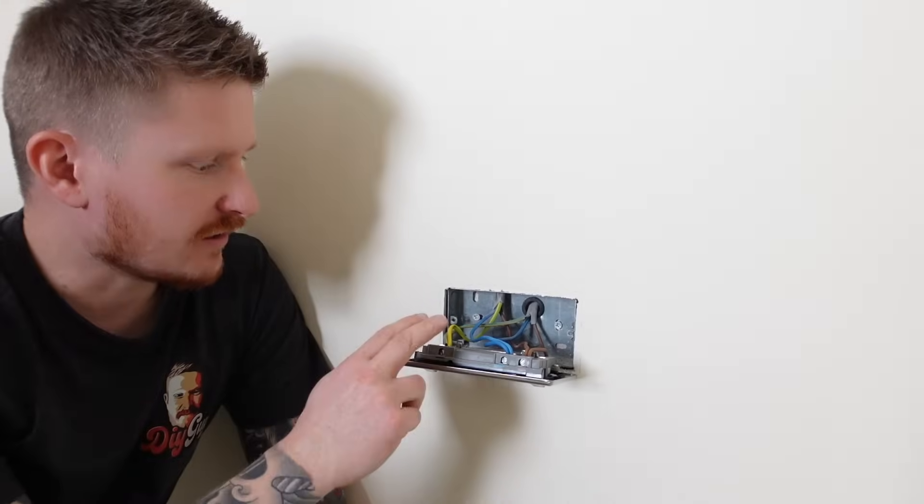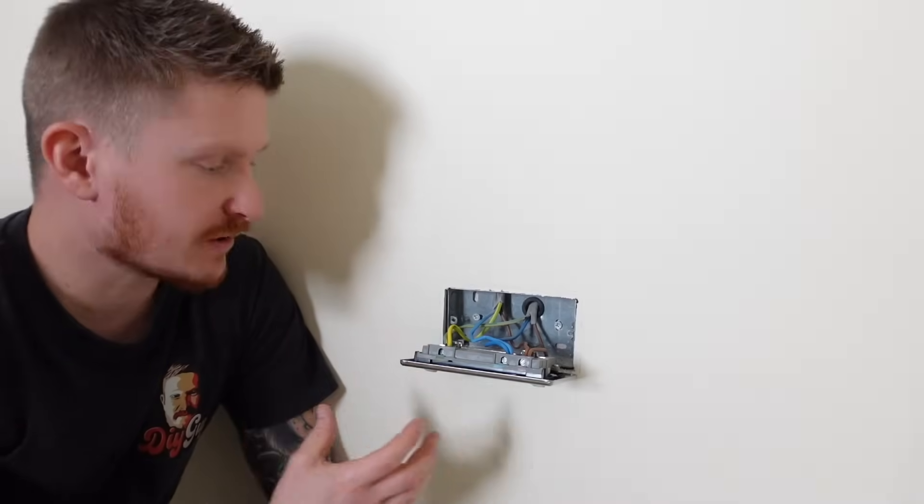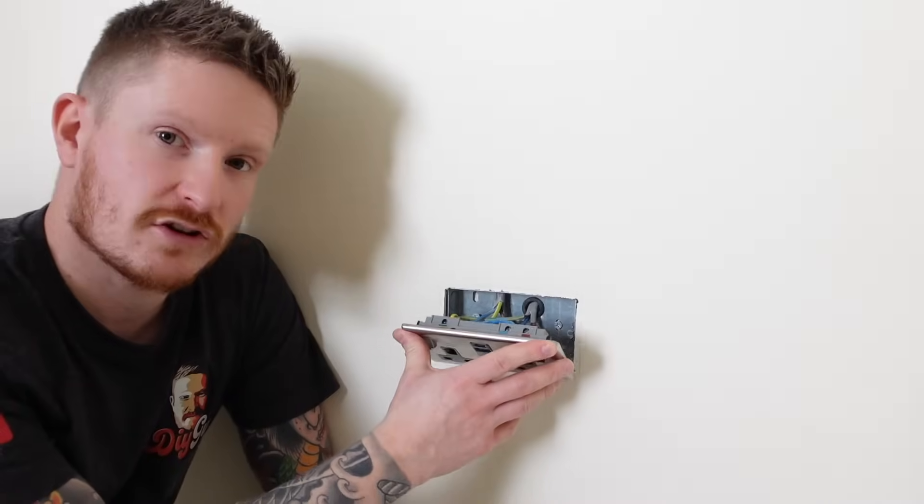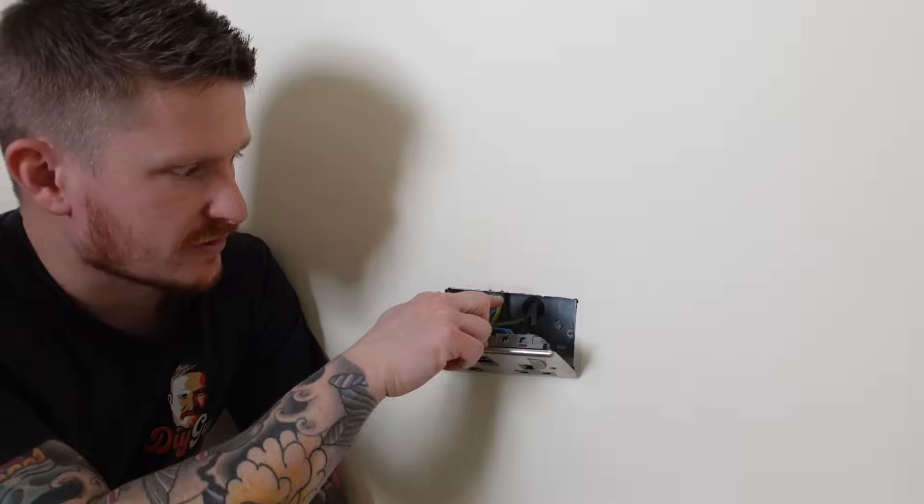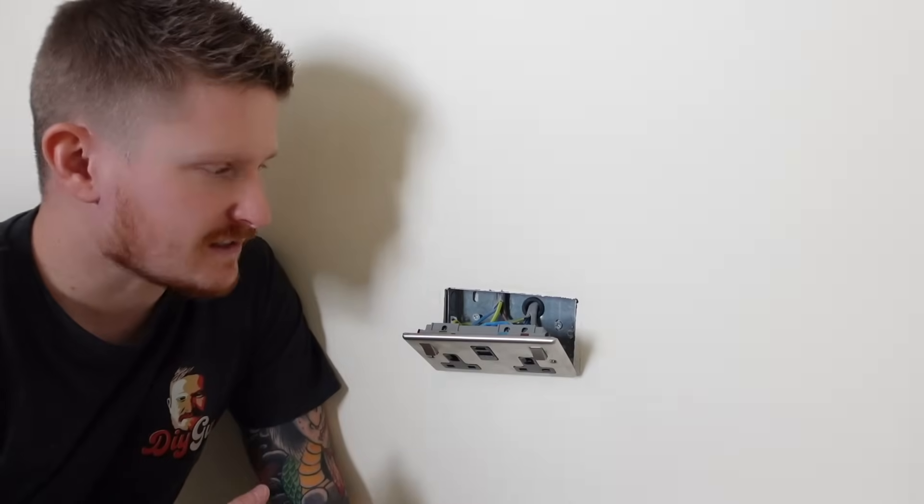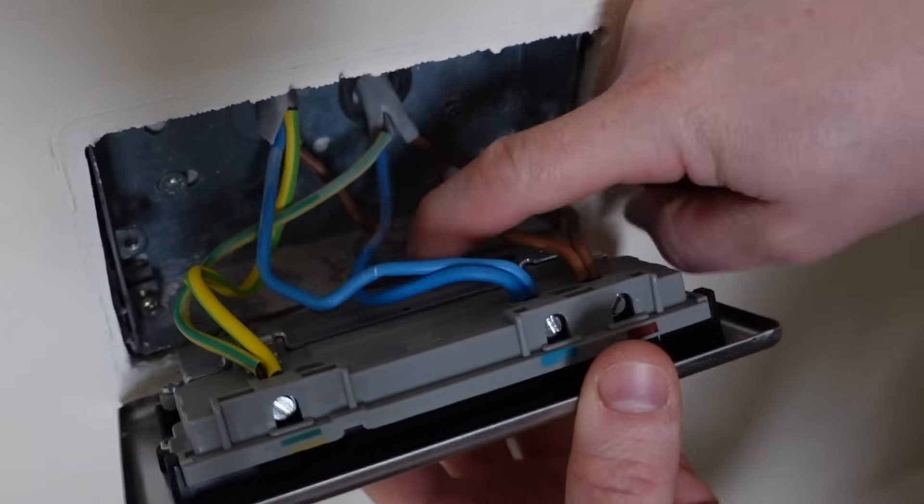It should look something like that. Now we want to make sure, especially because this is a 25mm back box, that the cables are not all bunched up. Because if they are and we try and push this socket back, what we could end up doing is damaging one of the cables. If it was a 35mm back box in the back here it might be a little bit easier.